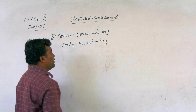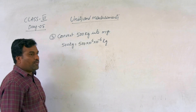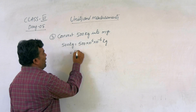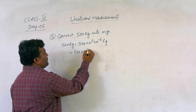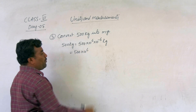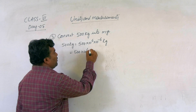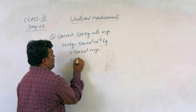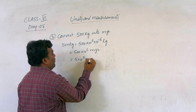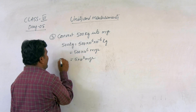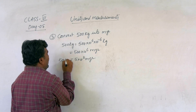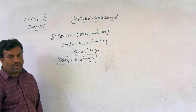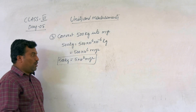Multiply 10 to the power of 6 and 10 to the power of minus 6 — they cancel. So you get 500 into 10 to the power of 6, and 10 to the power of minus 6 kg is called milligram. Therefore, 500 kg equals 5 into 10 to the power of 8 milligrams.